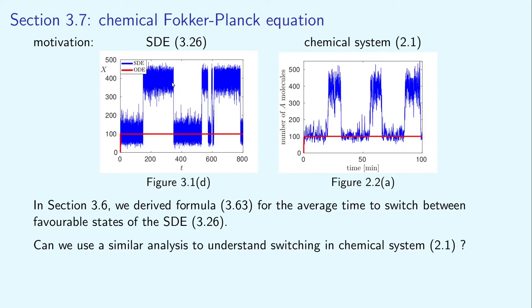In our last lecture, we derived formula 363 for the average time to switch between favorable states of the SDE326. Today, we will turn our attention back to stochastic chemical systems, which we studied in chapters 1 and 2. Comparing figures 2.2a and 3.1d, we see similar qualitative behavior. I deliberately chose my parameters in both models so that their favorable states are around the same values, 100 and 400. Our main question for today is: can we use the analysis developed for stochastic differential equations also in the case of stochastic chemical systems?